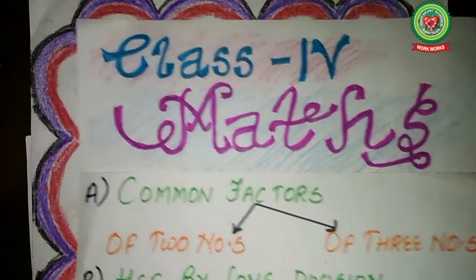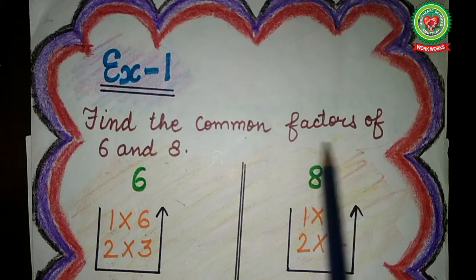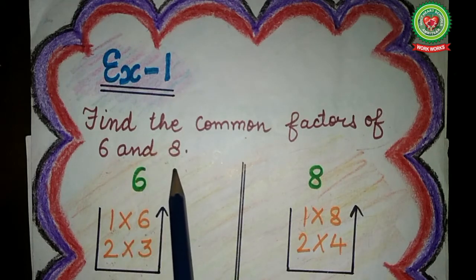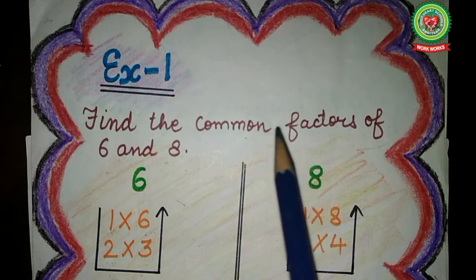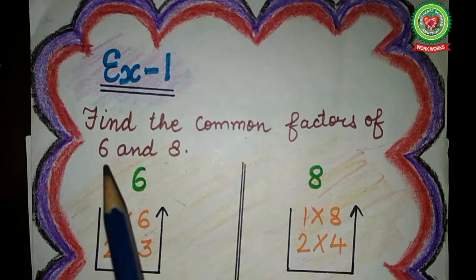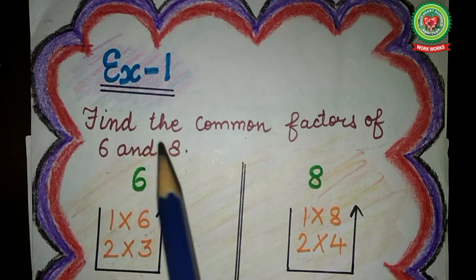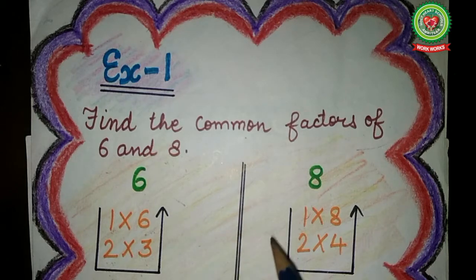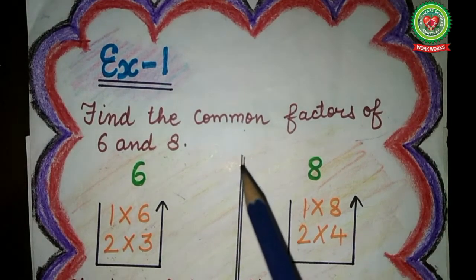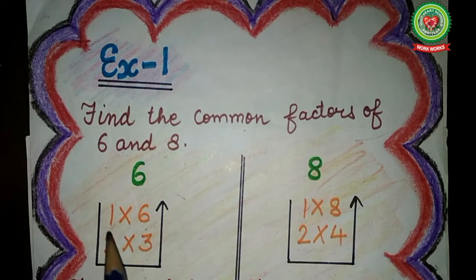To understand this topic, let's take some examples. Example number one: find the common factors of 6 and 8. I have to find common factors — meaning same factors. So before finding the common factors, I will find factors of 6, then factors of 8, and after that I will find the common factors. For finding the factors of 6 and 8, first of all I will draw a partition line — left side I will write 6, right side I will write 8.